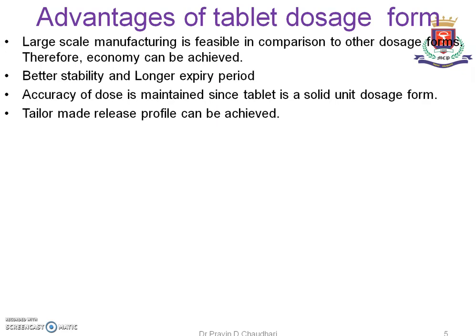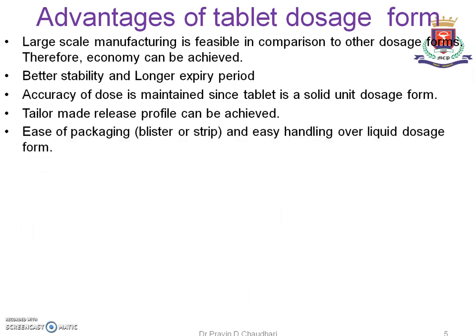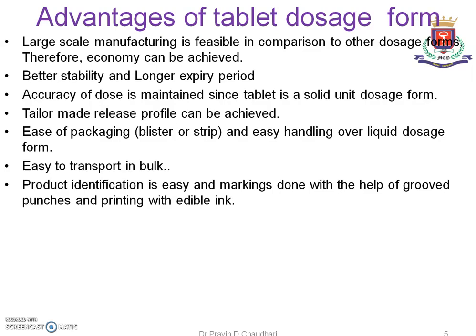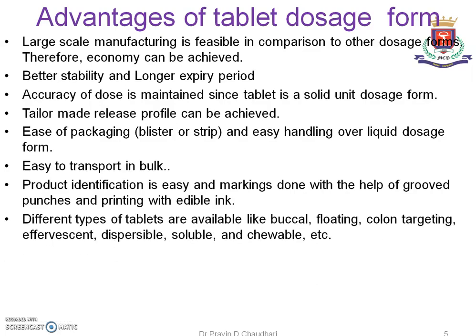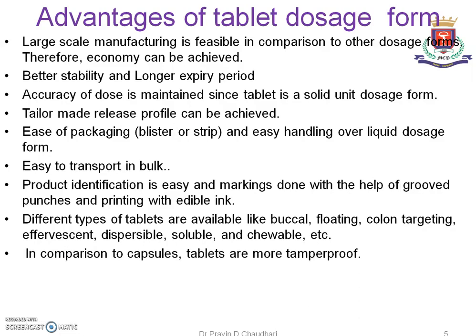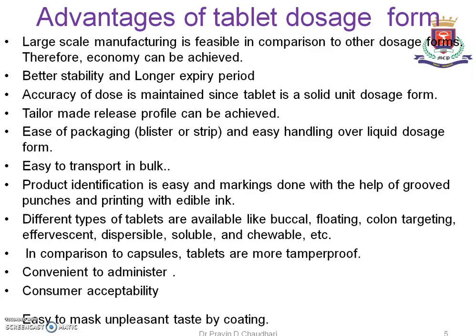Tailor-made release profile can be achieved. Easy packaging in blister or strip packing, and handling is easier compared to liquid dosage forms. Easy to transport in bulk. Product identification is easy, with marking done using engraved punches and printing with edible ink. Different types of tablets are available like buccal tablets, floating tablets, colon targeted tablets, effervescent tablets, dispersible tablets, soluble and chewable tablets. In comparison to capsules, tablets are more tamper-proof. Tablets are convenient to administer, with very good consumer acceptability.